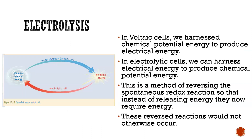In voltaic or galvanic cells we convert chemical potential energy into electrical energy — when we separate the two half cells the electrons pass through the wire generating electrical energy. In electrolytic cells, we harness electrical energy to produce chemical potential energy. This is the same process as recharging a secondary cell: we're forcing a non-spontaneous reaction by adding electrical energy, reversing the spontaneous reaction and putting energy in.